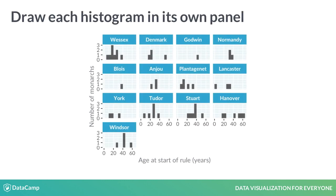In many cases, the only sensible way to draw lots of histograms is to draw them in their own panel. Here you can see 13 histograms, one for each house.